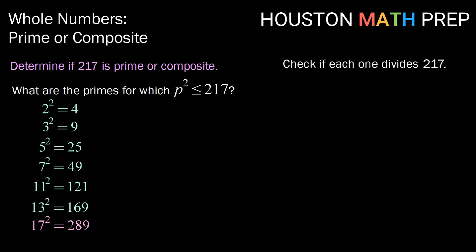So now we need to check if each one divides our 217. 2 does not divide 217 because it is not even. 3 does not divide 217 because 2 plus 1 plus 7 is 10.